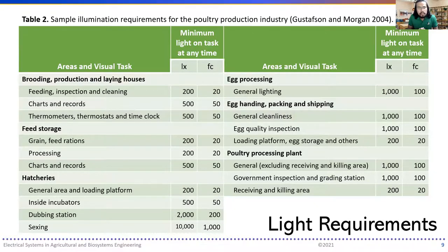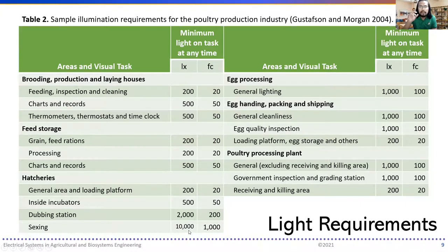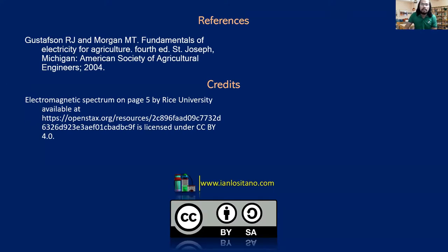The equivalent foot candle ratings are shown to the right of the lux values in the table. Notably, sexing — the determination of the sex of chicks — requires 10,000 lux, as it involves very important fine detail. In the next discussion, we will cover the computations and other parameters for illuminance and lighting. Thank you for listening.